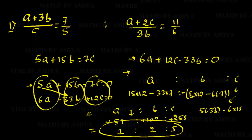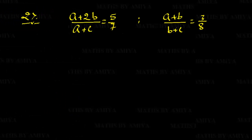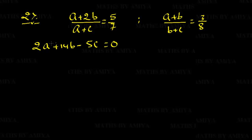I hope this is clear. For better understanding, let's practice with one more example. The question is: (a + 2b) / (a + c) = 5/7 and (a + b) / (b + c) = 3/8. We are not able to find any simple relation in the variables, so we make equations. Cross multiplying: 7(a + 2b) = 5(a + c) gives 2a + 14b − 5c = 0 as our first condition. And 8(a + b) = 3(b + c) gives 8a + 5b − 3c = 0 as our second condition. Three variables, two equations equal to 0, so we can find A : B : C.